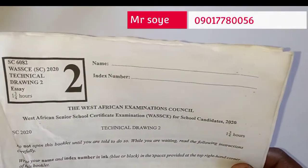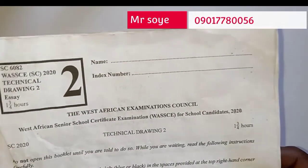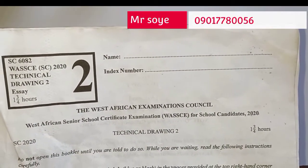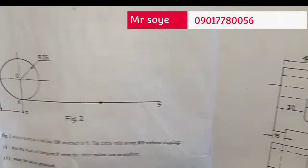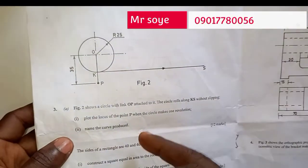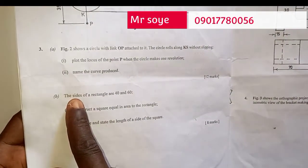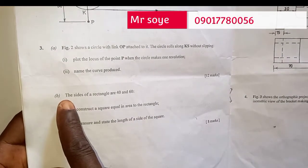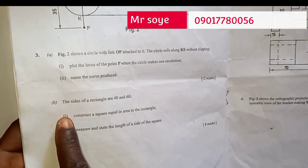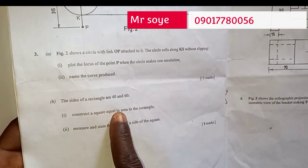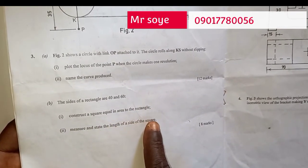All right, let's look at further questions in technical drawing SA-2 for the year 2020. We've done question 3A, now we'll move to 3B. Question 3B says: the sides of a rectangle are 40 and 60. Number one, construct a square equal in area to the rectangle. Number two, measure and state the length of a side of the square.